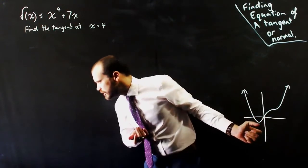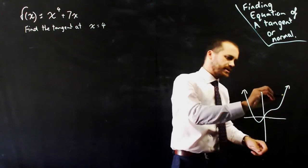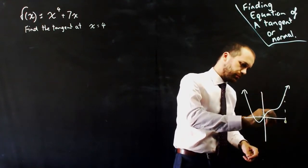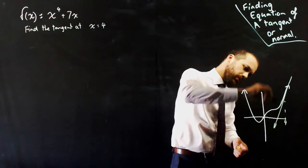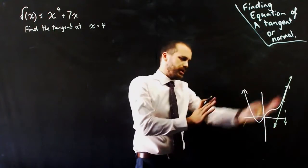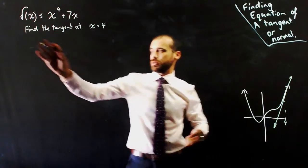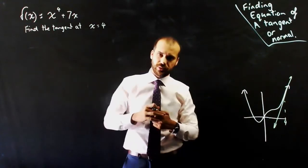So when x equals 4, which is approximately up here somewhere, what is the equation of the straight line that just touches the graph? That's what it means - find the tangent at x = 4.